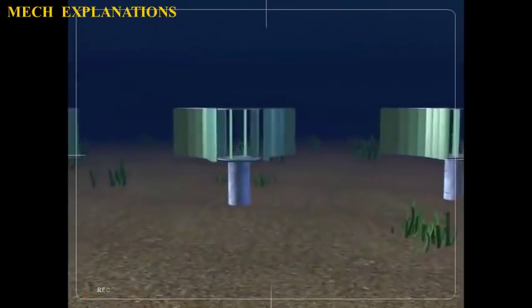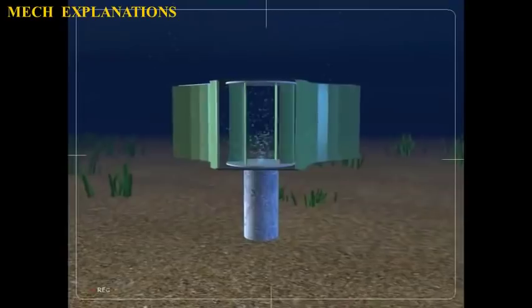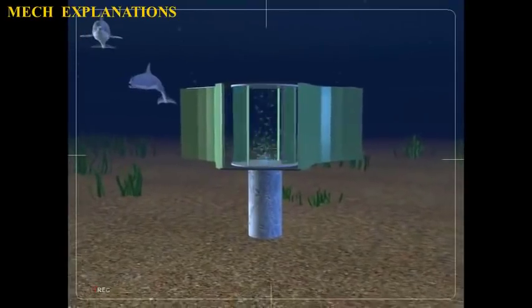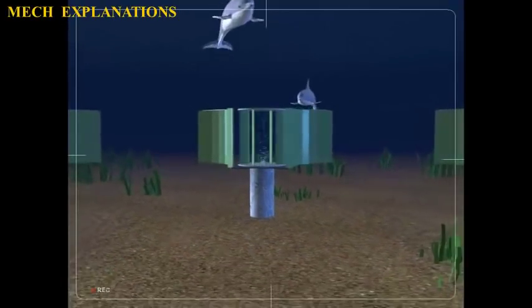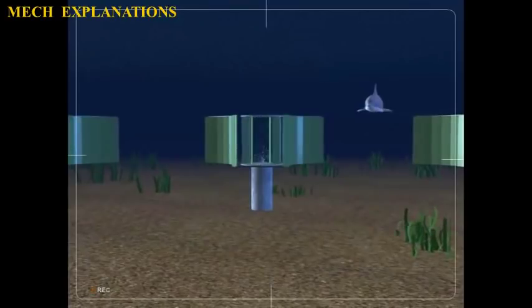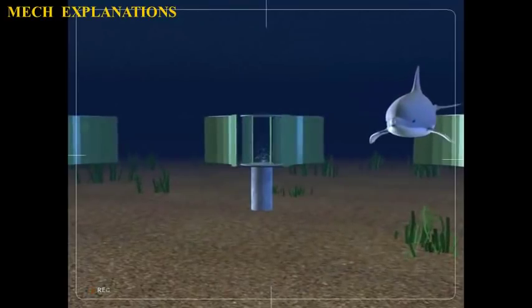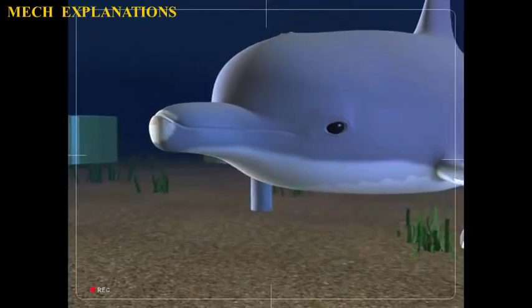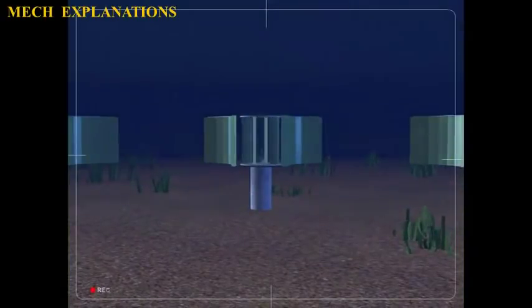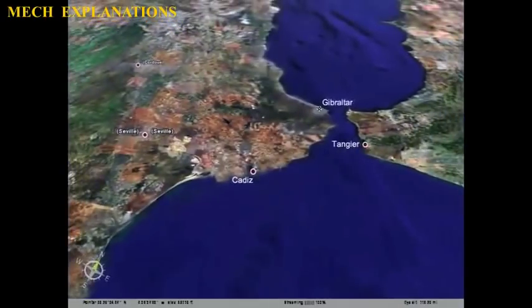It was the largest tidal power station in terms of output until Sihwa Lake Tidal Power Station opened in South Korea in August 2011. The Sihwa station uses seawall defense barriers complete with 10 turbines generating 254 MW.